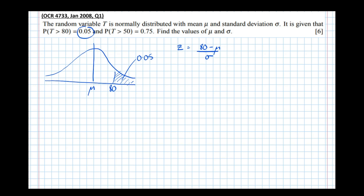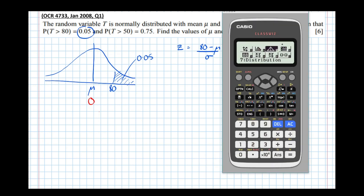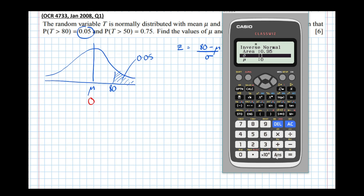We can do the same for the standard normal distribution, which has mean 0 and standard deviation 1. We can use this probability to find the z value. Going to distribution mode, inverse normal — the calculator deals with area to the left. The area to the left here is 0.95, standard deviation 1 and mean 0. We can see that the distance from the mean is 1.6449 for that particular boundary, when the probability is 0.05 to the right or 0.95 to the left.